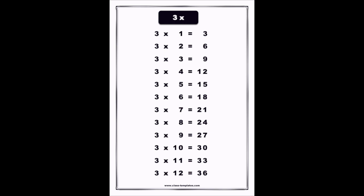Seven threes are twenty-one, eight threes are twenty-four, nine threes are twenty-seven, ten threes are thirty, eleven threes are thirty-three, twelve threes are thirty-six.